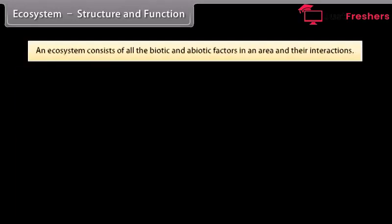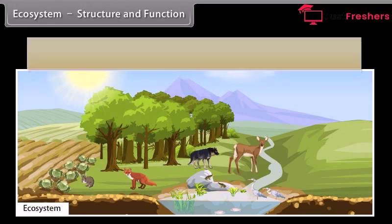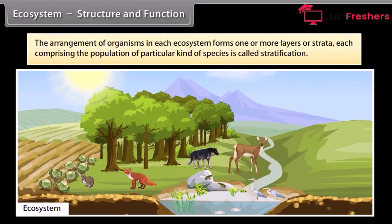An ecosystem consists of all the biotic and abiotic factors in an area. The arrangement of organisms in each ecosystem forms one or more layers or strata, each comprising the population of a particular kind of species, which is called stratification.